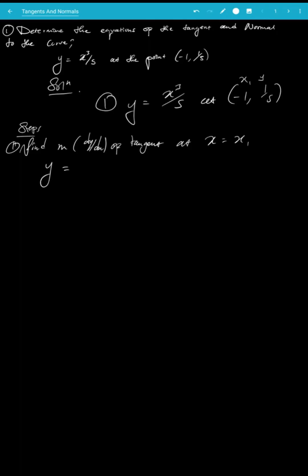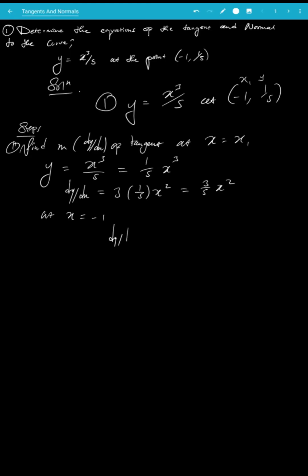We have the function y = x³/5, which can also be written as (1/5)x³. Differentiating gives dy/dx = 3 × (1/5) × x² = (3/5)x². Now at x = -1, dy/dx = (3/5) × (-1)² = 3/5. This is the gradient of the tangent.